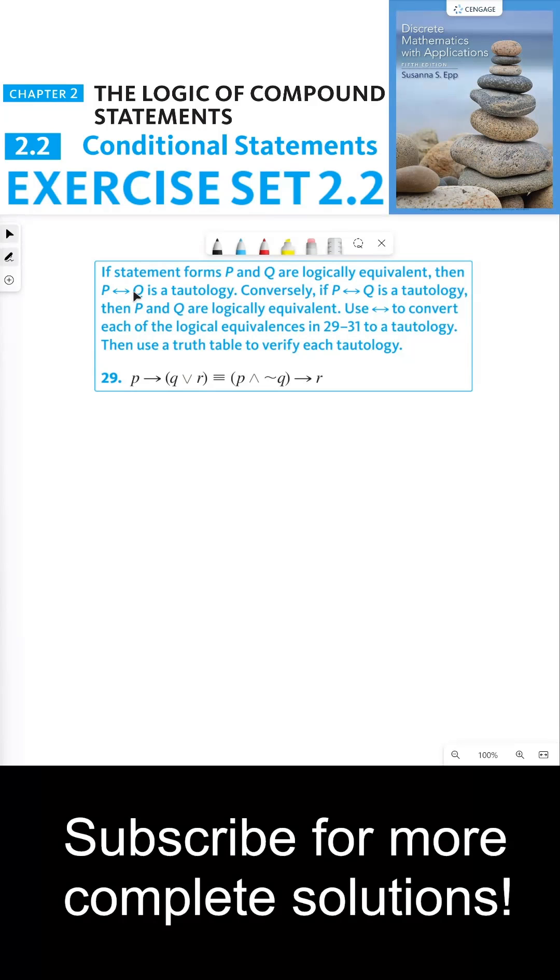So if the statement forms P and Q are logically equivalent, then P biconditional Q is a tautology. The directions say: use biconditional to convert each of the logical equivalences in 29 through 31 to a tautology. Then use a truth table to verify each tautology.